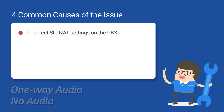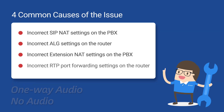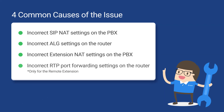Incorrect SIP NAT settings on the PBX. Incorrect ALG settings on the router. Incorrect extension NAT settings on the PBX. And incorrect RTP port forwarding settings on the router. Please note that the last two causes apply only to the remote extension, so we need to correct the corresponding settings.